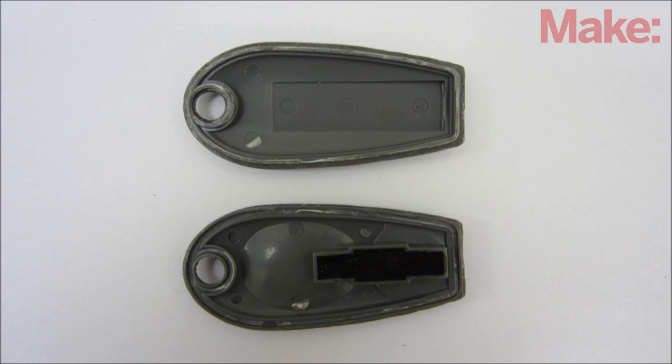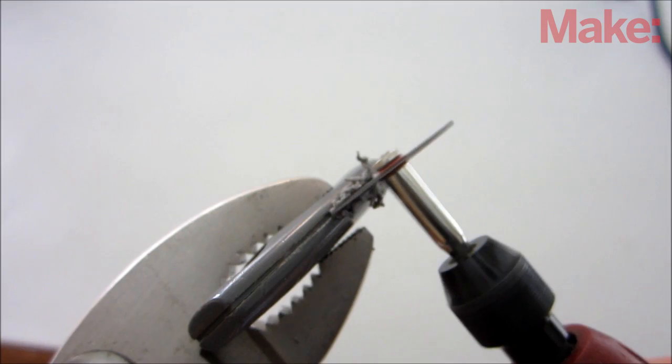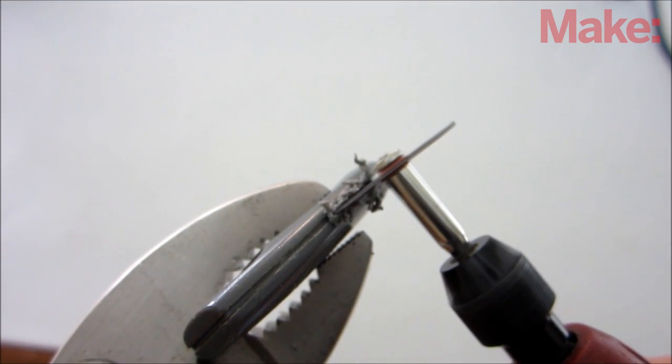First, you need to open up the housing. To do this, you can either crack the glue seam by squeezing it with a pair of pliers, or you can cut it open with a rotary tool.